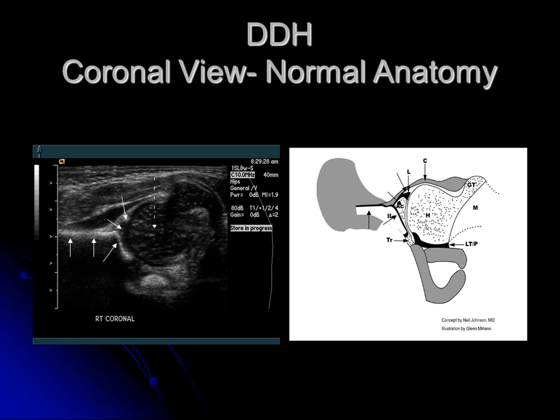This is the labrum, and then this is the cartilaginous femoral head — it looks like cartilage anywhere else: dark with little speckles in it. And then this is the cartilaginous greater trochanter. In infants, the greater trochanter is attached to the cartilaginous femoral head, and then as they grow, they separate out into adult anatomy.